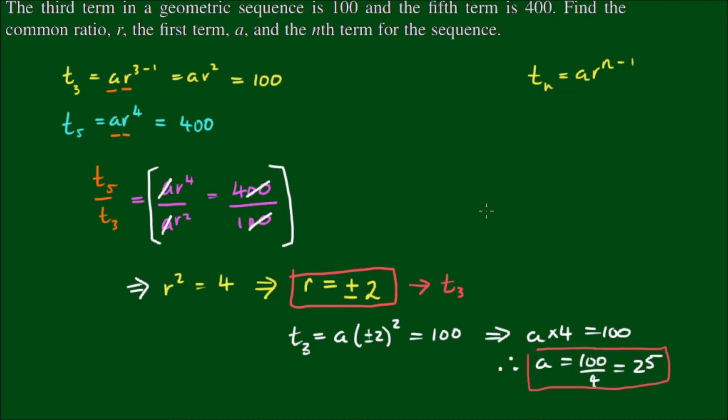Finally we're asked to find the nth term. So from here, t sub n, the nth term, is given by a, which is 25, times r. I'm just going to leave it as plus or minus 2. It doesn't look very elegant but for convenience sake let's just leave it like that, to the power of n minus 1.